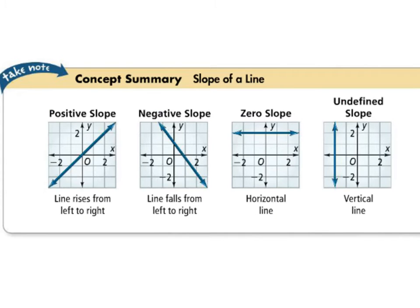There are four different possibilities for slope. Positive slope means that as you move to the right on the graph, the y value increases, or it's rising from left to right. Negative slope means as you move to the right, the line goes down, or it's falling from left to right.